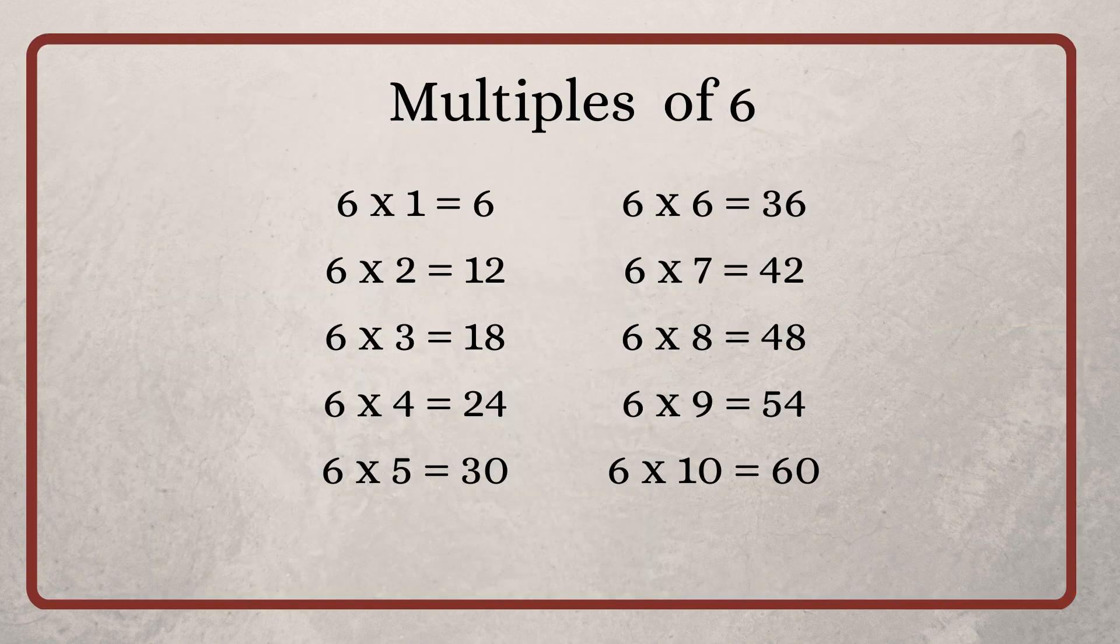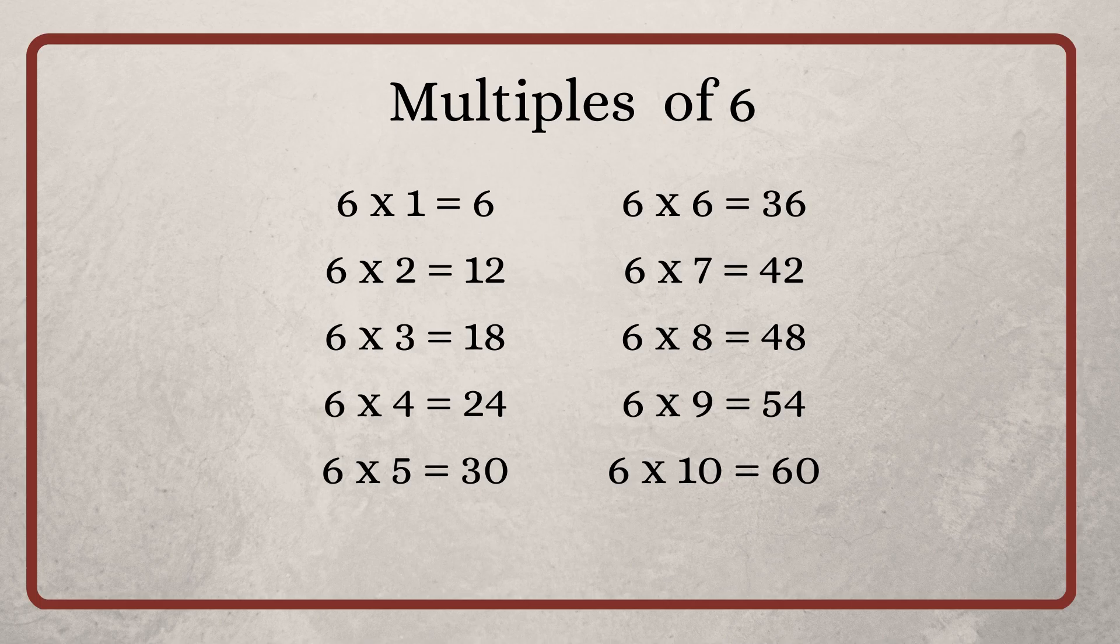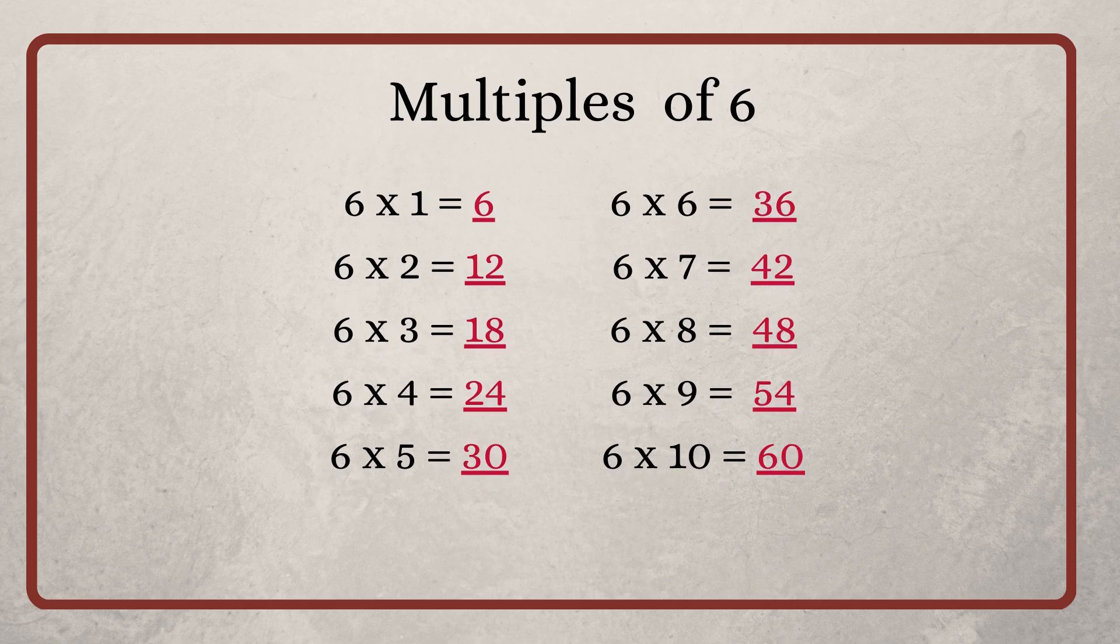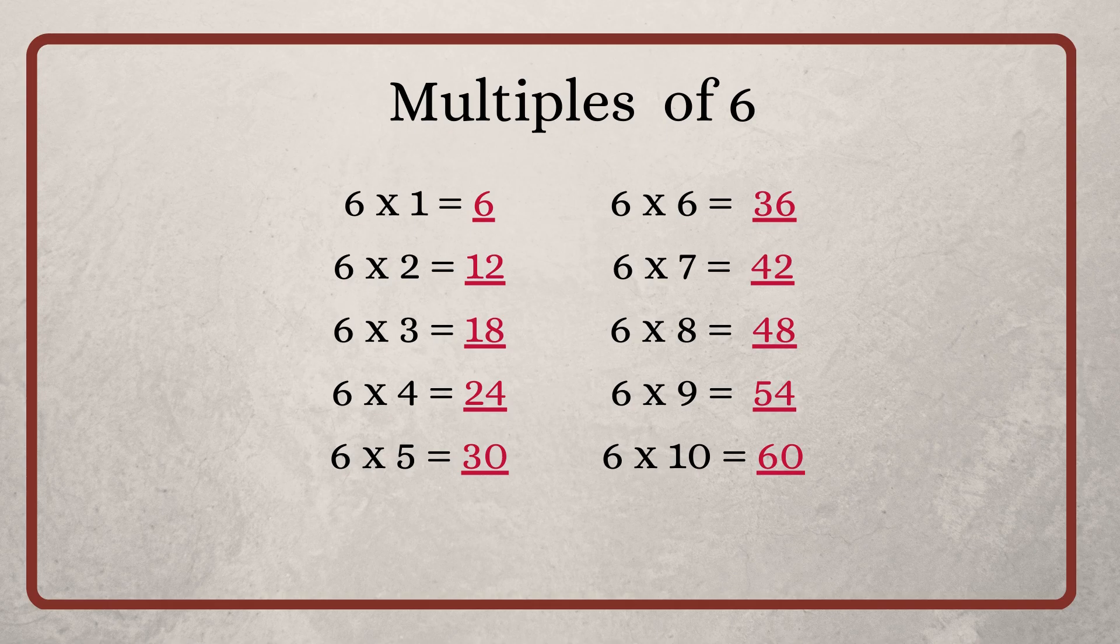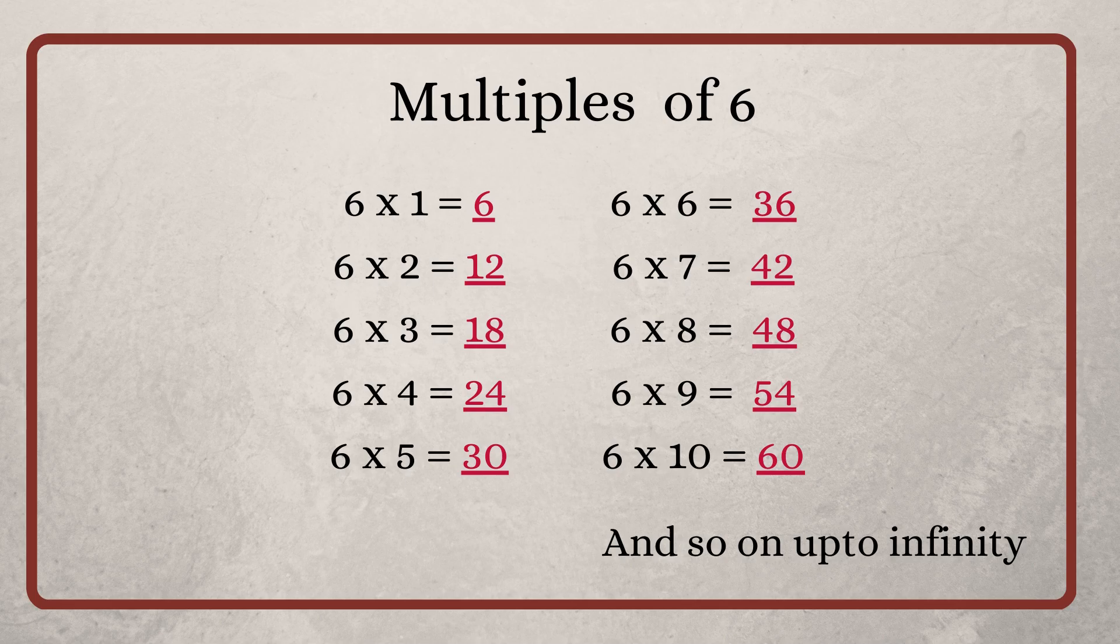In other words, 6 multiplied by any integer will give you all the multiples of 6. Thus, we can say 6, 12, 18, 24 and so on are all multiples of 6. And these multiples go on and on up to infinity.